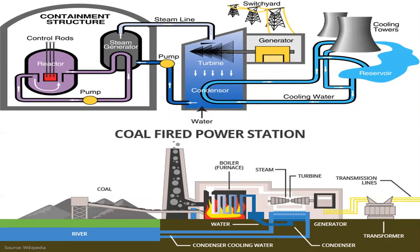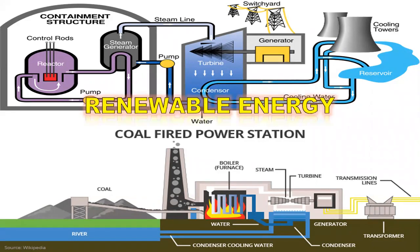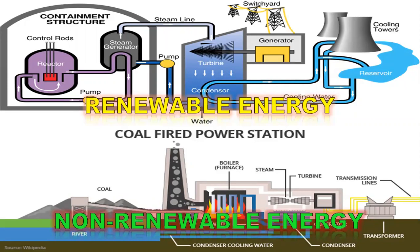The energy we use to power everything from our homes to schools and workplaces comes from a variety of different sources. This can be broken down into renewable sources — such as wind energy, solar energy, hydropower, and geothermal energy — and non-renewable energy sources such as oil, coal, and natural gas. Renewable energy is any natural energy resource that can replace itself quickly and independently.